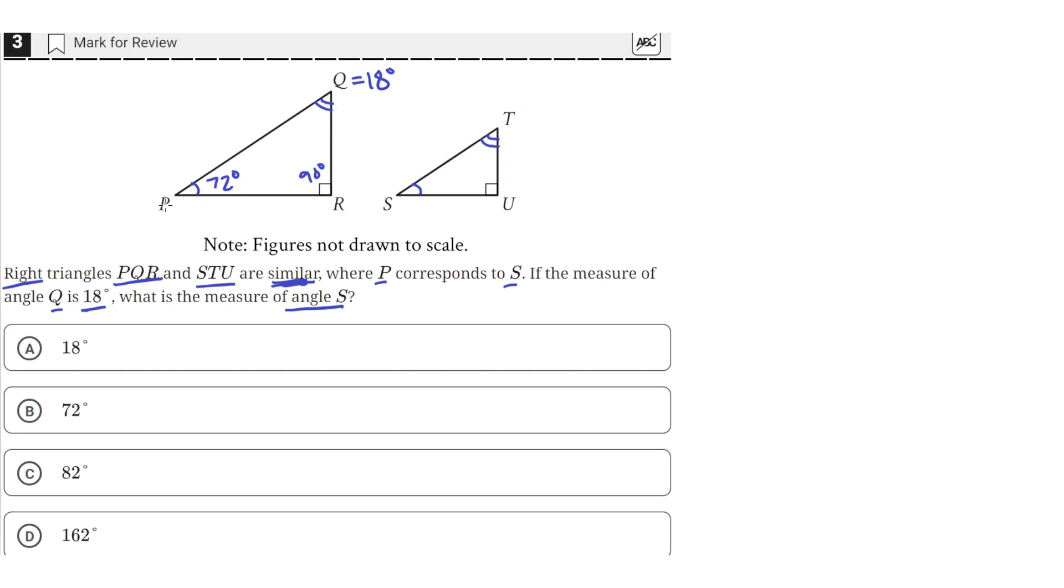And since these triangles are similar, angle P is equal to angle S. So if angle P is 72 degrees, that means that angle S is also 72 degrees. So the measure of angle S is 72 degrees, and B is the correct answer.